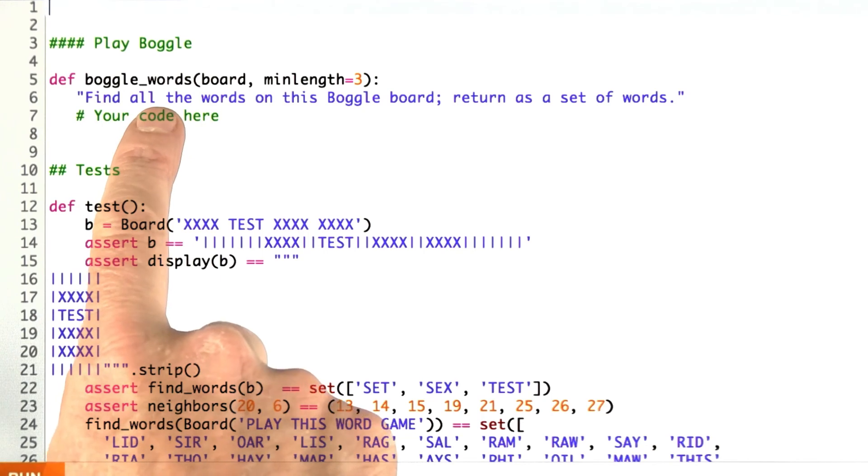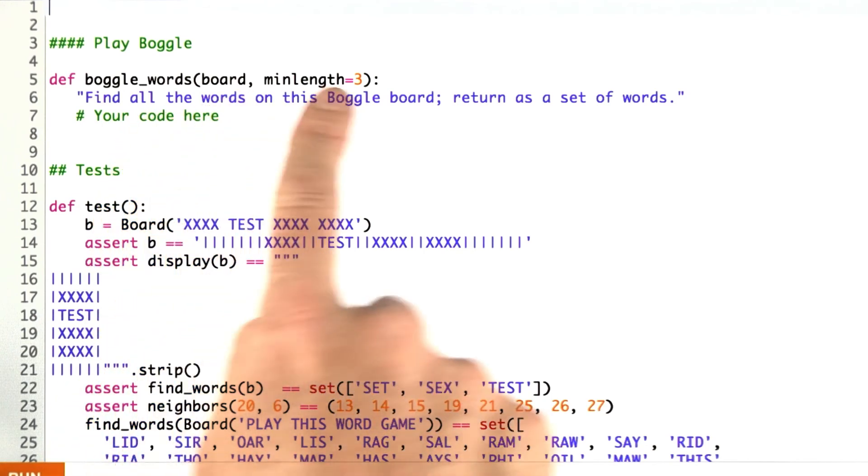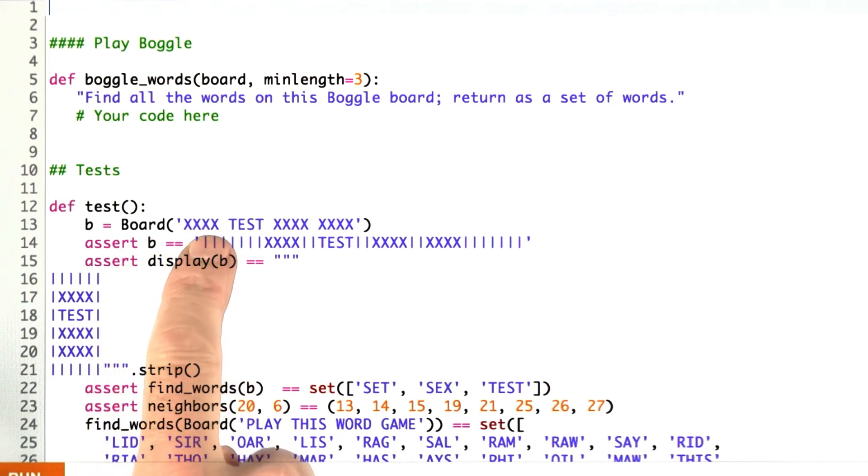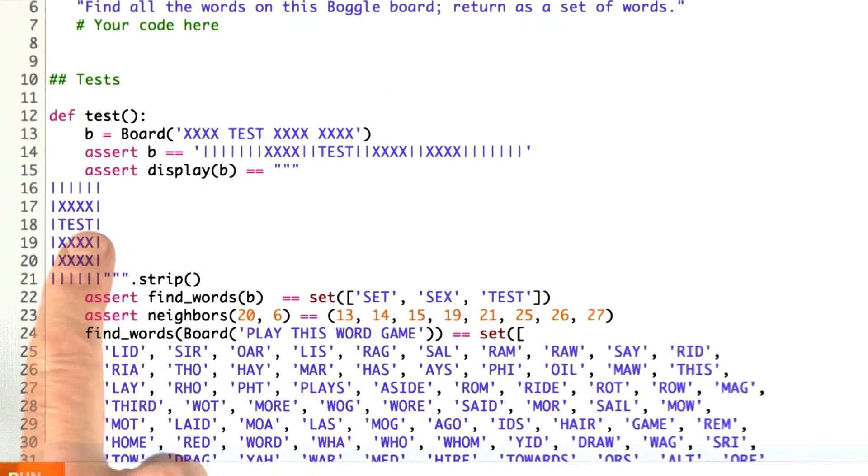So here's what I'm asking you to write. This function, boggle_words, given a board and a minimum length for each of the words, return a set of words. Here's some tests for you. First, the board function, and I've written that, so don't worry about it. We'll see it below. Here's a simple test. Not many words you can find in there. That should be the whole set.